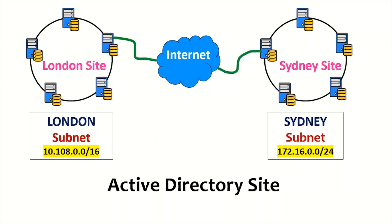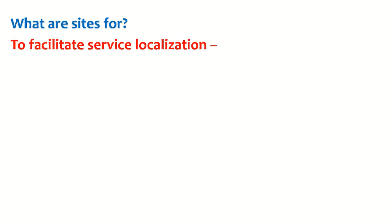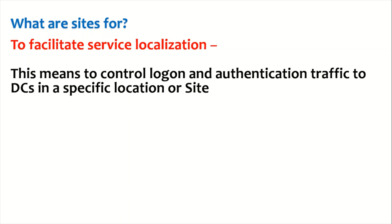We have two sites — London site and Sydney site — and they are connected using a high-speed connection over the internet. One of the reasons to create an active directory site is to facilitate service localization, which means to control logon and authentication traffic to domain controllers in a specific location or site.